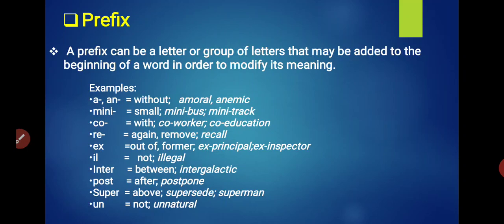Pyare vidyarthiyo, now we will gain knowledge about prefix and suffix separately. First of all, we will talk about prefix. A prefix can be a letter or group of letters that may be added to the beginning of a word in order to modify its meaning. Let's clear with examples. The examples are A, AN. These are prefixes meaning without or opposite. Like the word amoral, anemic - moral's opposite becomes amoral, and anemic.